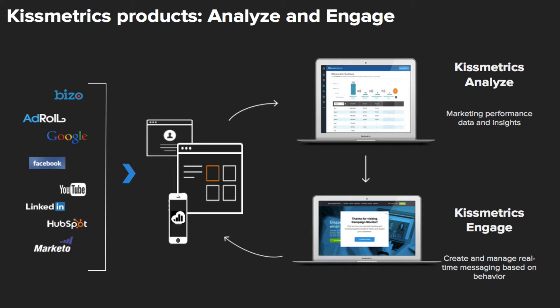We have two products within Kissmetrics. Analyze is our customer analytics platform built around helping you understand what's actually working and what's not working within your website and app, diving into individual campaigns and looking at granular user behavior. Engage is our conversion rate optimization tool that helps you interact and respond to customers in real time on your website to prompt conversion, nudge people through your funnel, and generally communicate with people on your website.